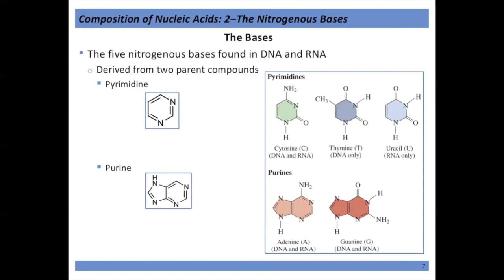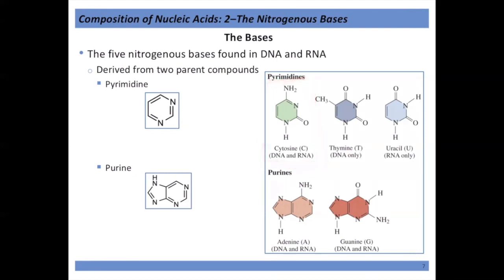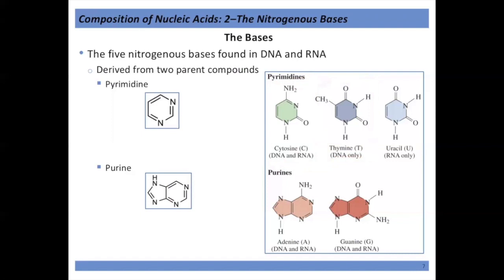Of the pyrimidine bases there are three: cytosine, thymine, and uracil — and yes, you should know all these structures and be able to draw them. Of the purine bases there are two: adenine and guanine. Pyrimidines have three bases because both DNA and RNA contain cytosine; DNA contains thymine while RNA contains uracil. DNA also lacks the two-prime hydroxy group on the sugar.